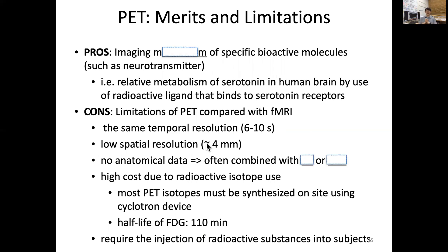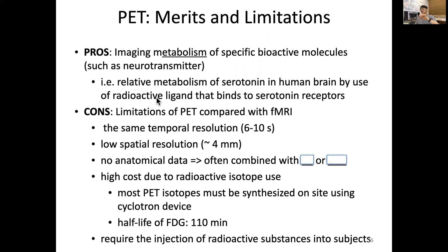Positron emission tomography — what are the pros and cons, or merits and limitations? A pro is in imaging the metabolism of specific bioactive molecules such as a neurotransmitter. We can, for example, study the relative metabolism of serotonin in the human brain by use of a radioactive ligand that binds to serotonin receptors. Then we can measure that relative metabolism.